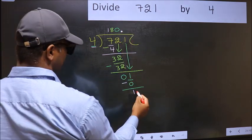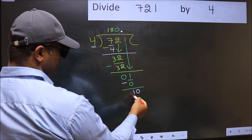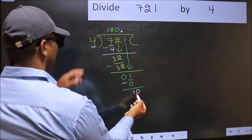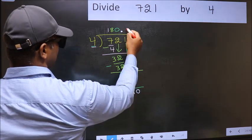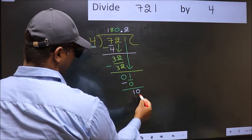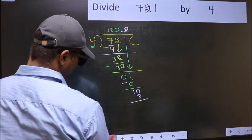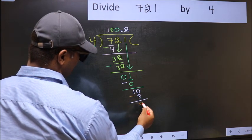So 10. A number close to 10 in the 4 table is 4 times 2 equals 8. Now you should subtract: 10 minus 8 equals 2.